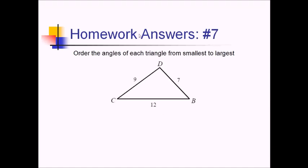For number seven, we want to order the angles of the triangle from smallest to largest. Again, bigger sides are across from bigger angles. So if I order my sides from smallest to largest, the angles across from them go in the same order. We've got 7 less than 9 less than 12. The smallest angle is across from the 7 side — that's angle C. The next biggest is across from 9 — so angle B. And angle D is the biggest, across from the biggest side.